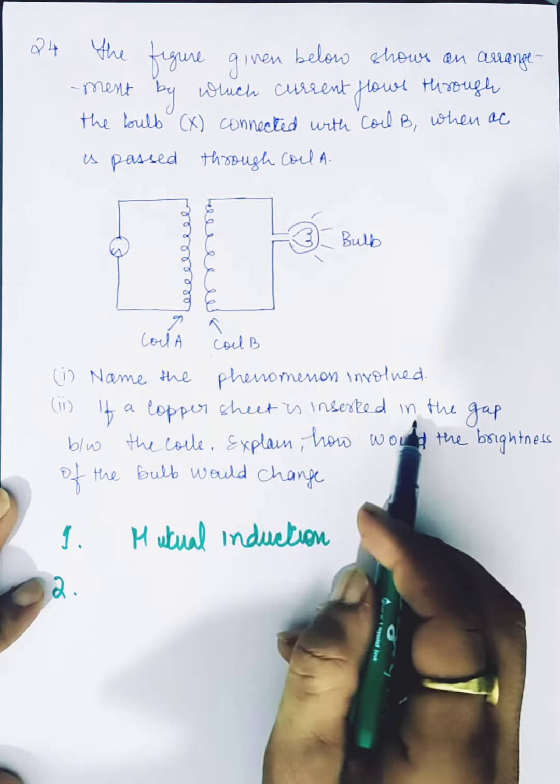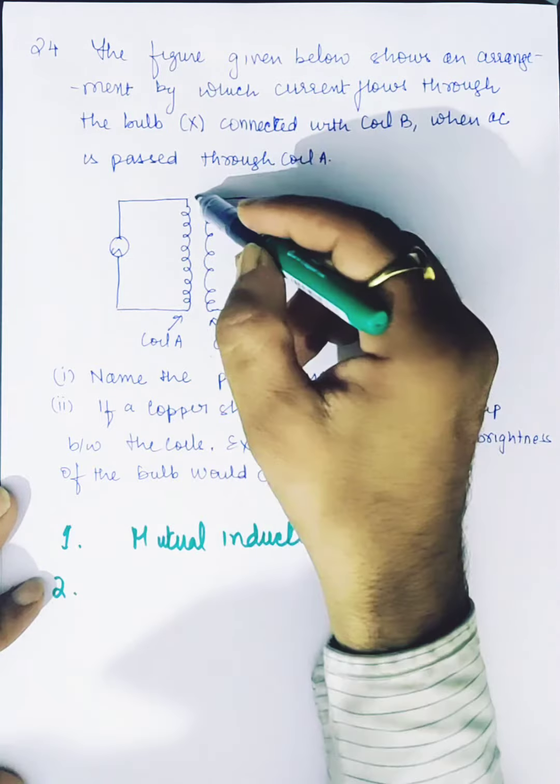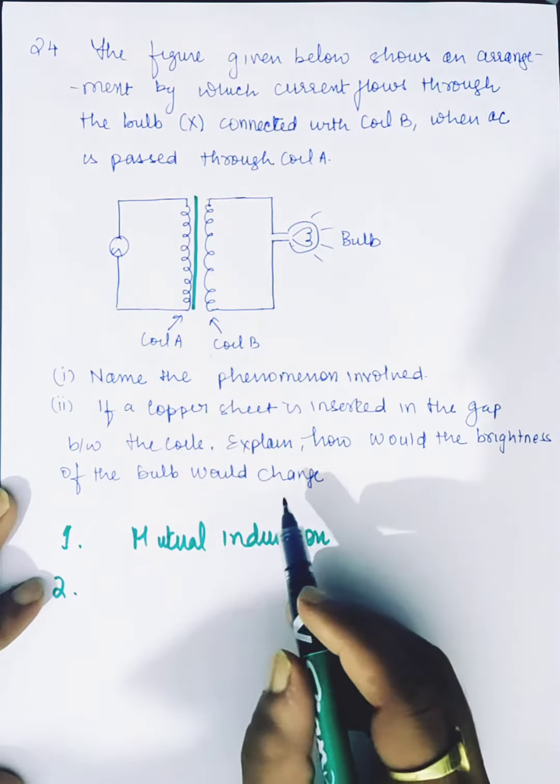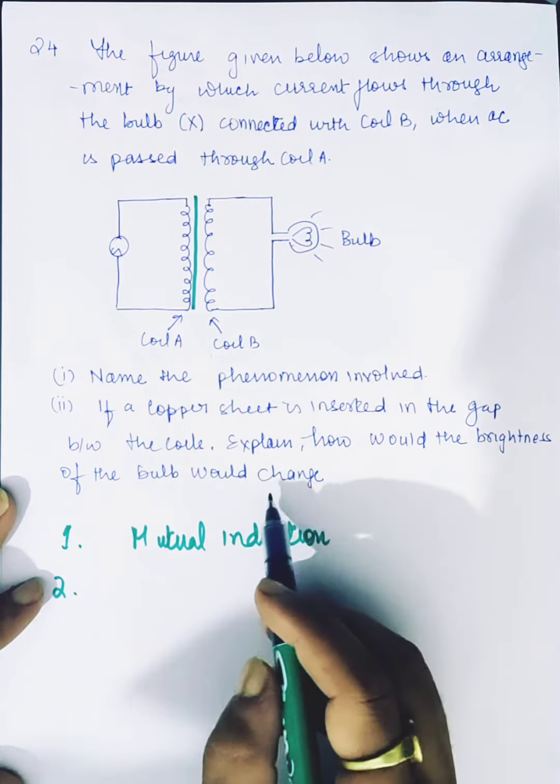If a copper sheet is inserted in the gap between the coils, how would the brightness of the bulb change?